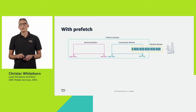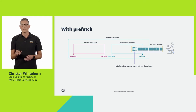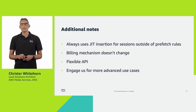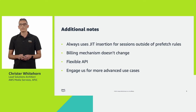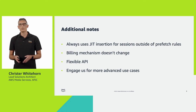When a client makes a request to Media Tailor, it evaluates all of the prefetched schedules associated with the configuration and if it finds a match, inserts the prefetched ads. The insertion time here is a lot faster because all of the decisioning work has already been done. There will be cases where Media Tailor doesn't find a match — perhaps the viewer session started after the retrieval window closed, or a user pauses a DVR stream and resumes playback after the consumption window has ended. In these cases Media Tailor will simply revert to the just-in-time model.